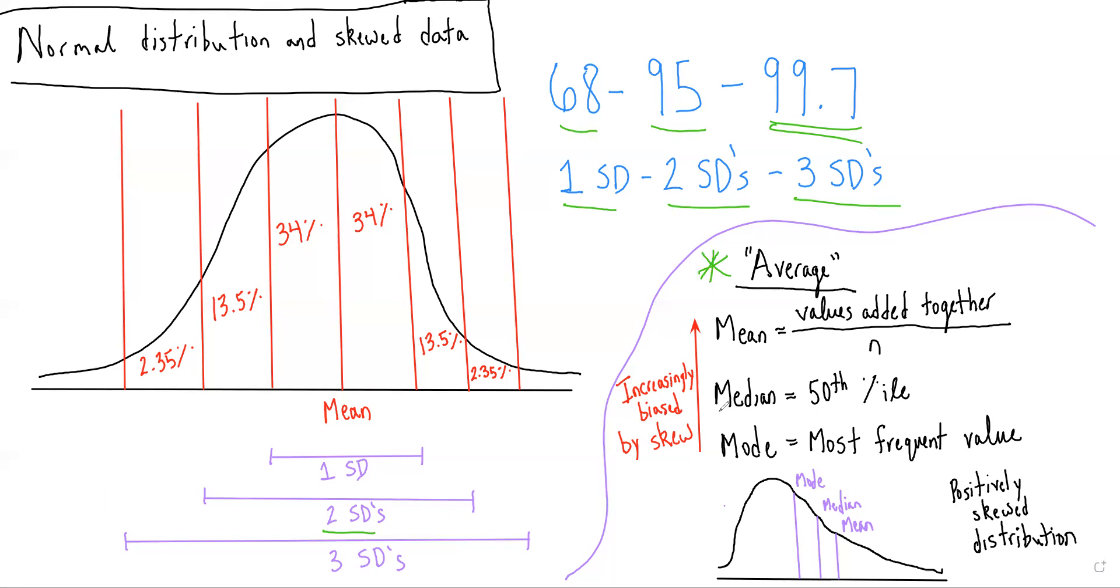Another average is the median, which is just the 50th percentile value, and the mode, which is the most frequent value encountered. One commonly tested concept is that as you move from the mode to the median to the mean, those values become increasingly biased by the skew. The mode is most resistant to skewed data and the mean is least resistant to skewed data.